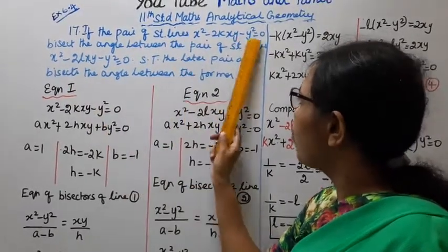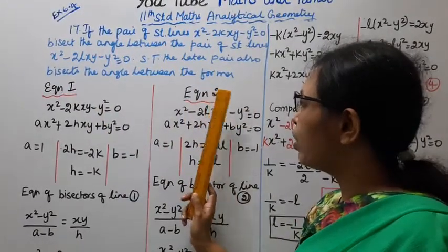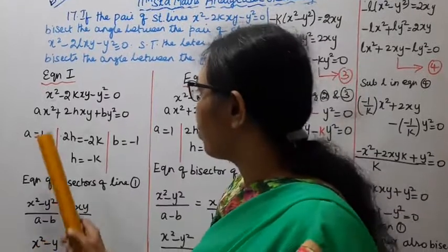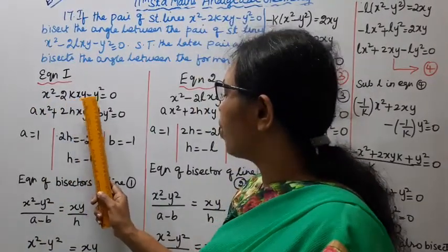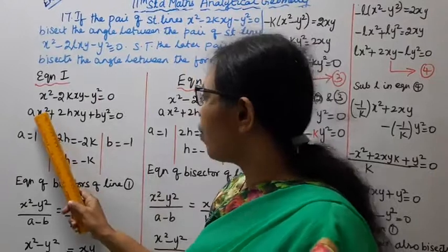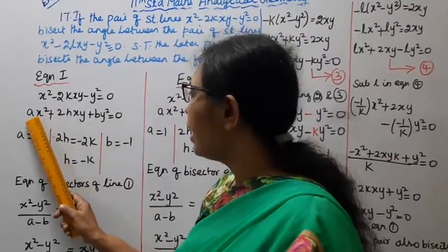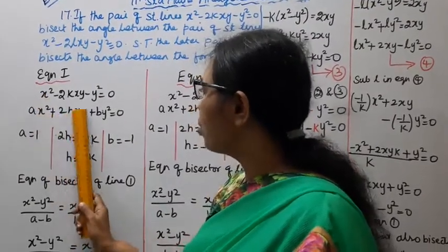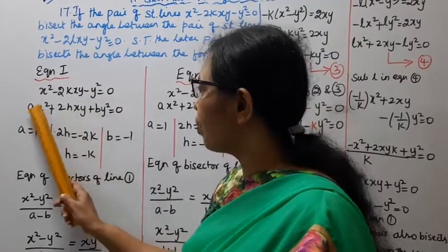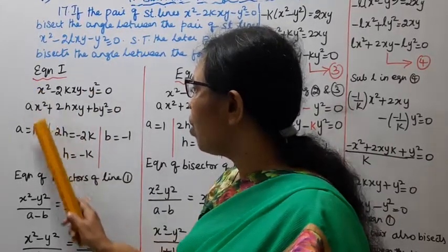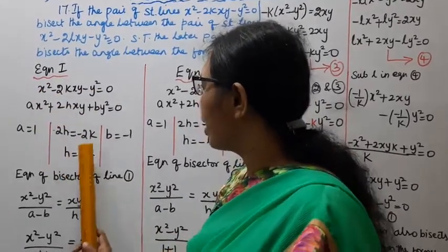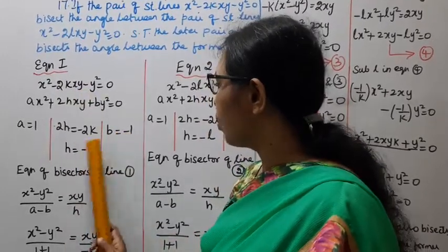We have 2 equations: equation 1 and equation 2. For equation 1, x² - 2kxy - y² = 0. Comparing with the general form Ax² + 2hxy + by² = 0, we get A = 1, 2h = -2k, and b = -1.